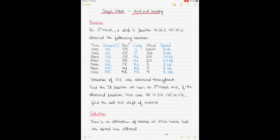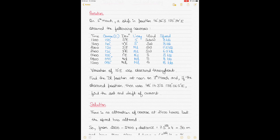Going straight into the question: it's the 6th of March and a ship is in position 46°36' South, 175°34' East. The following courses were steamed by the ship — time, compass course, deviation, leeway, wind direction, and vessel speed are all given. Note this is the speed of the ship, not the wind speed.